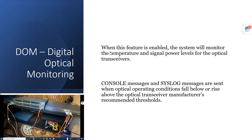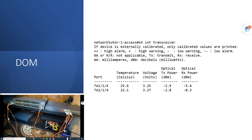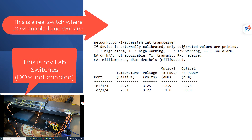I'm going to show you how to monitor and troubleshoot fiber optic transceivers. If you issue the command 'show interface transceiver,' it will spit out all the transceivers that have DOM enabled. In this example, I have only two ports — 10 gig ports — that have DOM enabled. These are the values you're going to get, and you need to make sense of them.